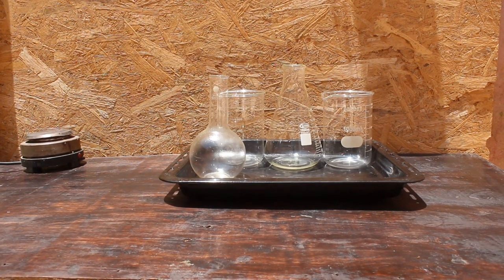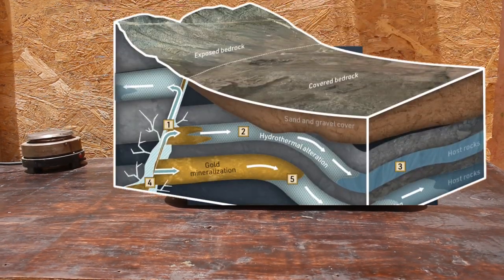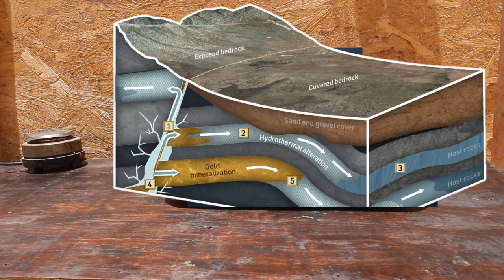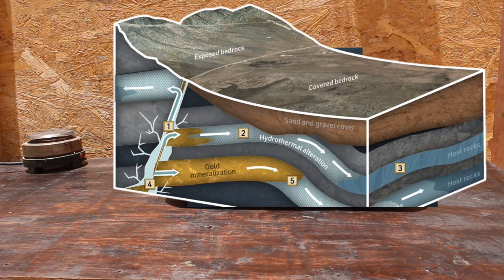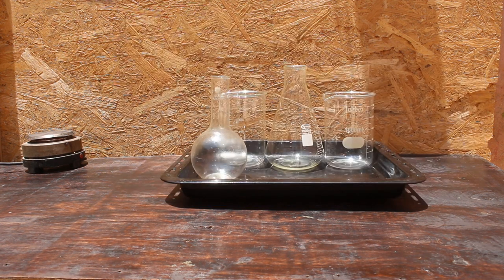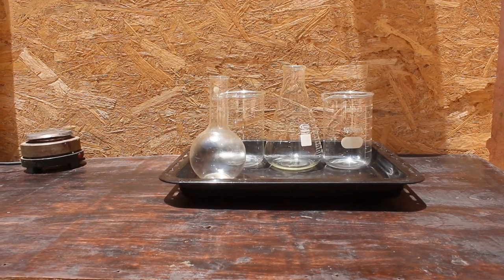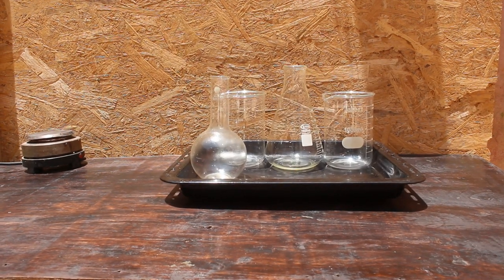Carlin-type deposits. Carlin-type gold deposits are unique and often low-grade gold deposits found in Nevada, USA, and some other regions worldwide. These deposits are characterized by the presence of microscopic gold particles disseminated in carbonate rocks or black shale.